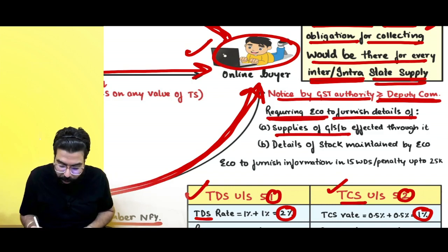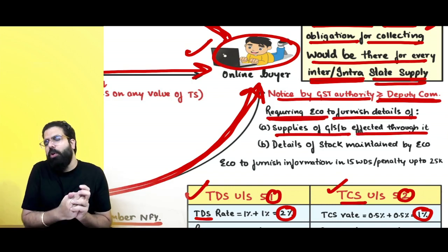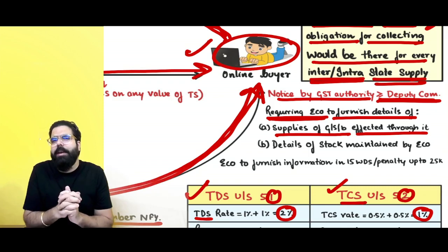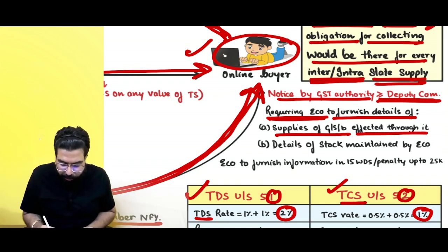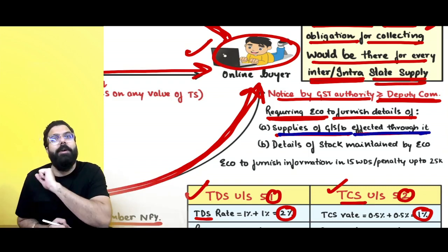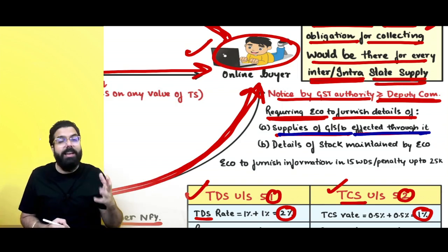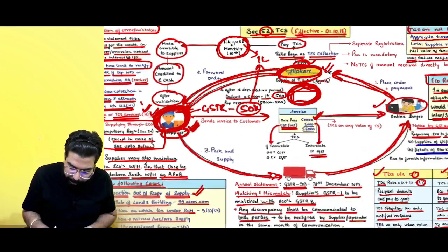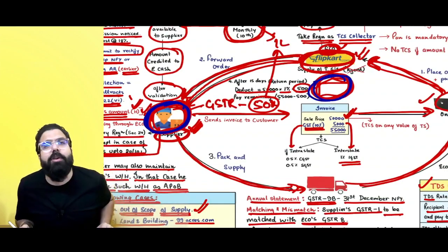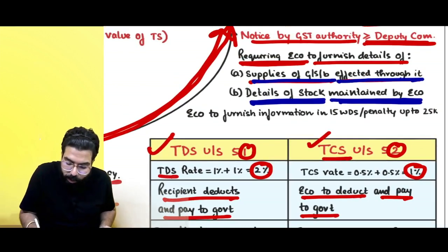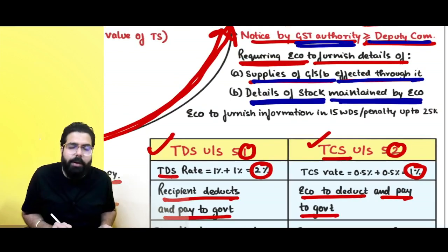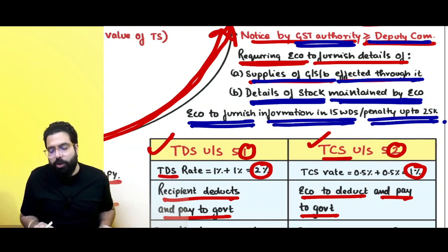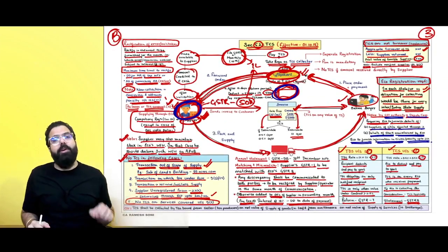A GST authority of rank greater than or equal to Deputy Commissioner can require the e-commerce operator to furnish details of supplies of goods, services, or both affected through it. For example, if the Deputy Commissioner wants to know how much goods Ramesh supplied through Flipkart, they can ask Flipkart for details of supplies by a particular person or total supplies by various suppliers. They can also ask for details of stock maintained. The e-commerce operator must furnish the details within 15 days; otherwise a penalty of up to 25,000 rupees can be levied.